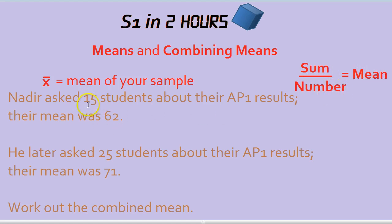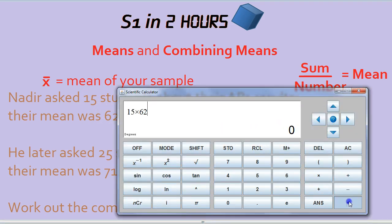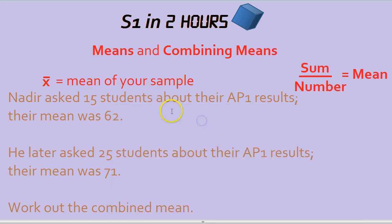In other words, we can find out the total score of these 15 students by doing 15 times by their mean of 62. 15 times 62 is 930, so the total score of these students was 930.